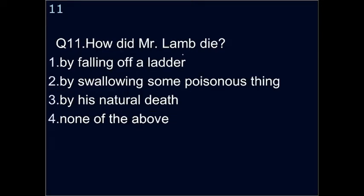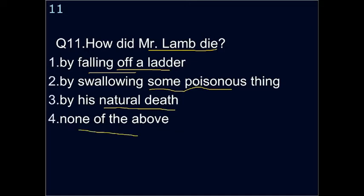Question eleven: how did Mr. Lamb die? Options are: by falling off a ladder, by swallowing something poisonous, by natural death, or none of the above. He died by falling off a ladder — after Derry went home and was supposed to return, Mr. Lamb had gone up a ladder to pick apples and fell from it.